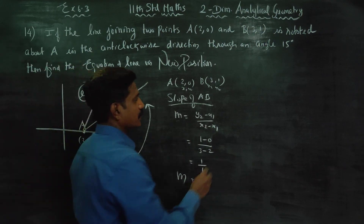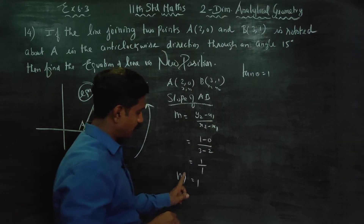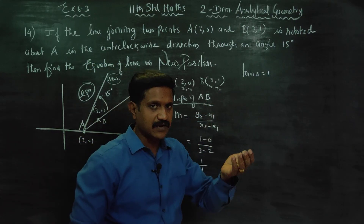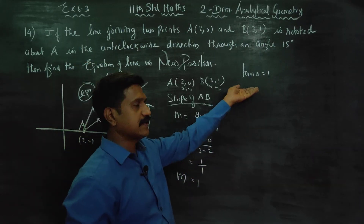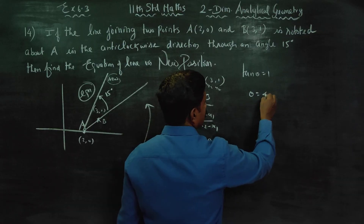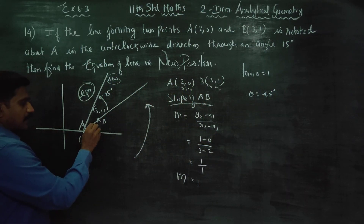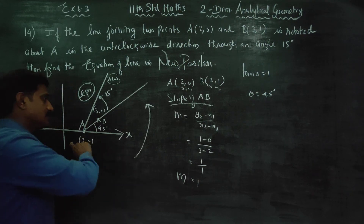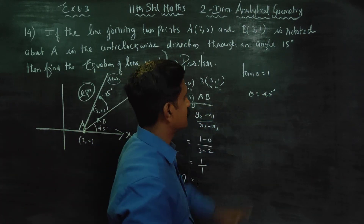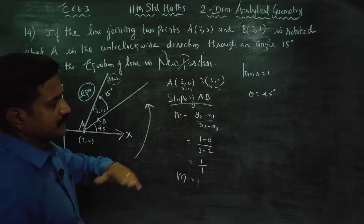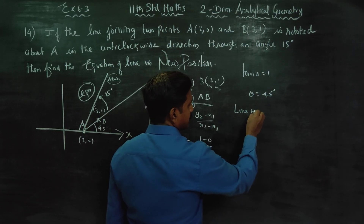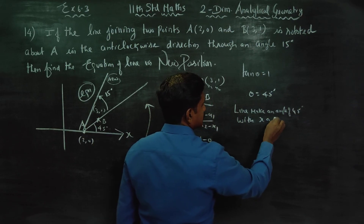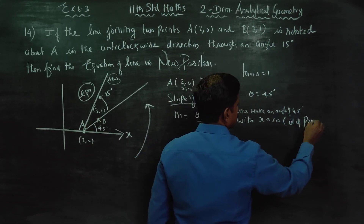From 10th standard, slope M = tan θ. Since M = 1, we have tan θ = 1, so θ = 45 degrees. AB makes an angle of 45 degrees with the x-axis. This is my old angle of inclination — this is my old line position.